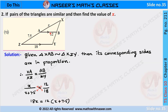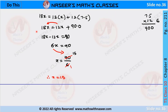Similar triangles XAB and XZY are given. We have to find the value of x. We already know that if two triangles are similar, then their corresponding sides are in the same ratio. So we can write XA by XZ is equal to AB by ZY. After substituting the given values, we can write x by x plus 7.5 is equal to 12 by 18. Now we cross multiply: 18 into x is equal to 12 into x plus 7.5. After simplification, 18x is equal to 12x plus 12 into 7.5. Now we transpose 12x from RHS to LHS: 18x minus 12x is equal to 90.